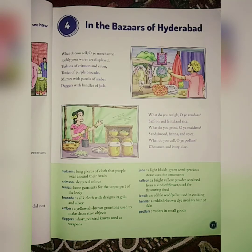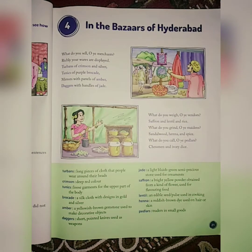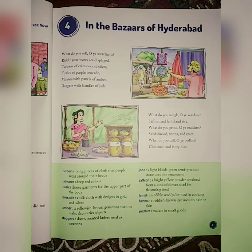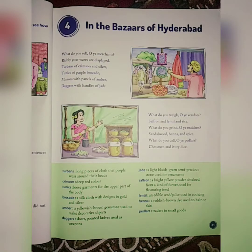Good morning class. Today we are going to start with our fourth chapter of English, that is 'In the Bazaars of Hyderabad.' Before going through the poem, first we will discuss the introduction part. The poet of this poem was Sarojini Naidu. She was a freedom fighter and a poet. The poem depicts the life and events of India of her time, describing the various stalls in the bazaars of Hyderabad.